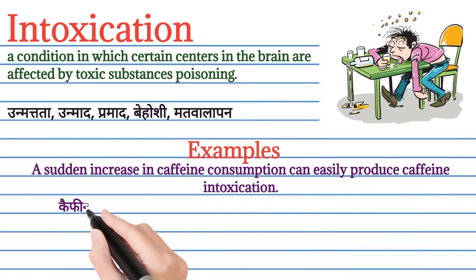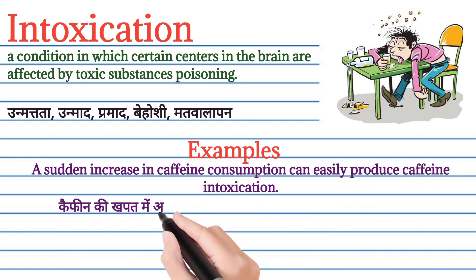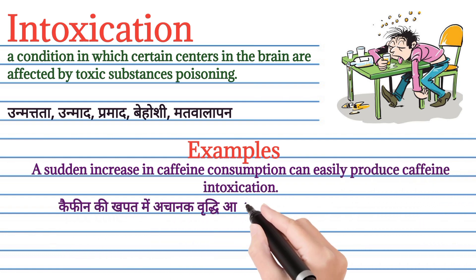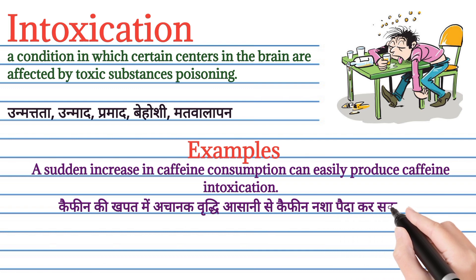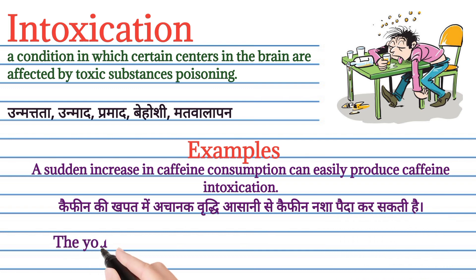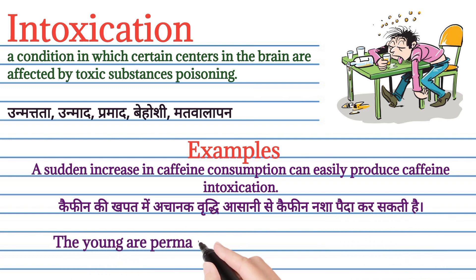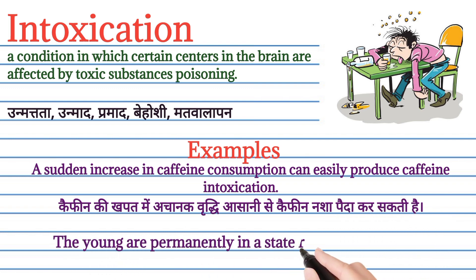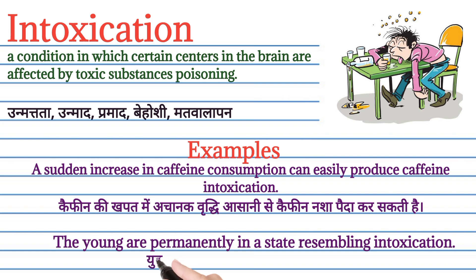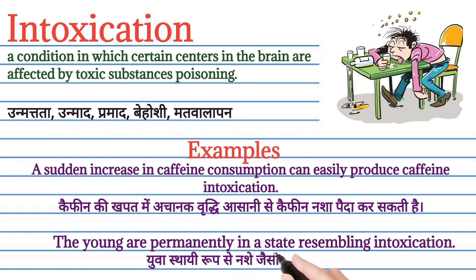Intoxication ko lekar examples se sentence mein achha se samaj lete hai. A sudden increase in caffeine consumption can easily produce caffeine intoxication. Caffeine ki khapat mein achanak vriddi asani se caffeine nasha payda kar sakti hai. The younger permanently in a state resembling intoxication. Yuvas thai rup se nasha jaisi sthiti mein hai.